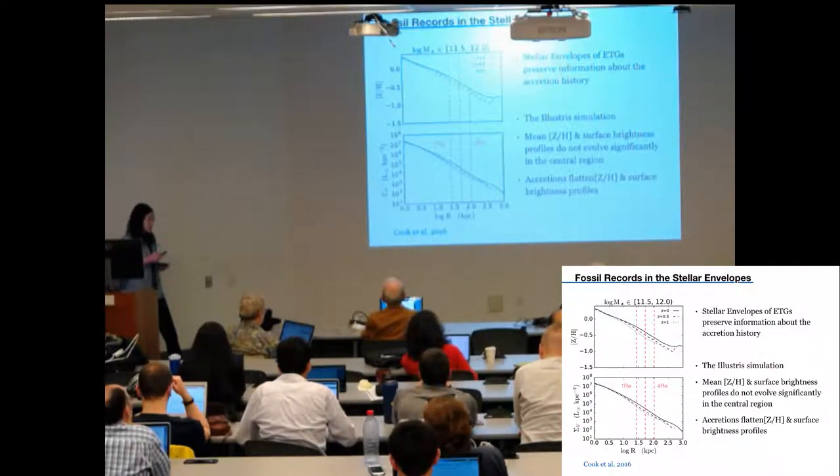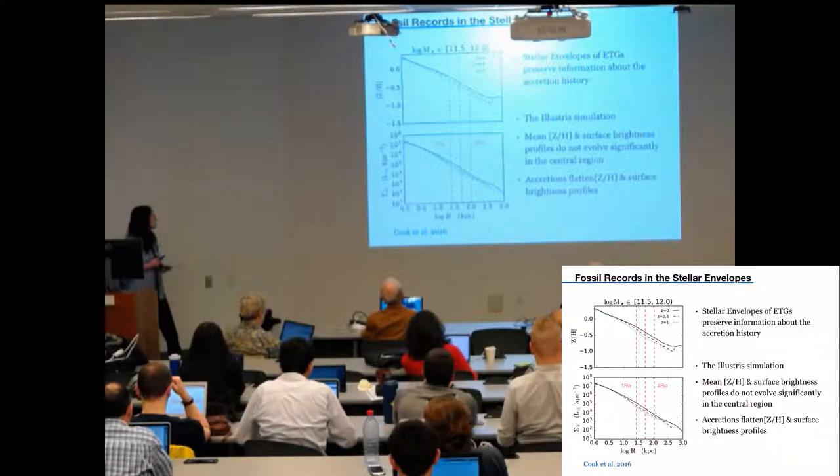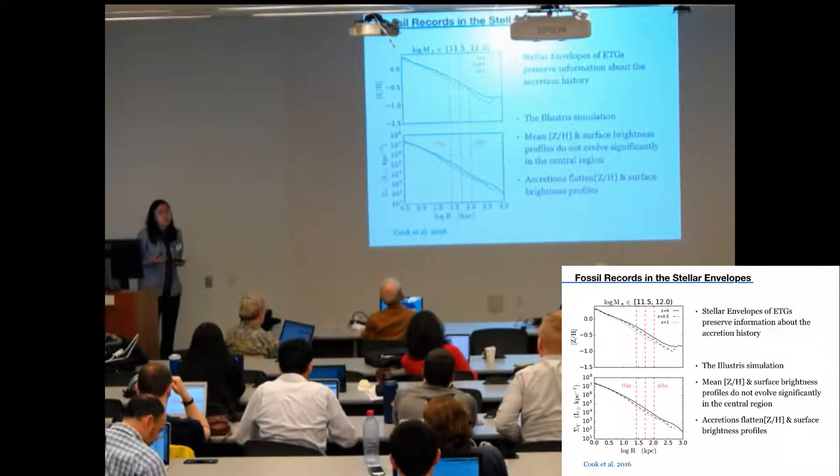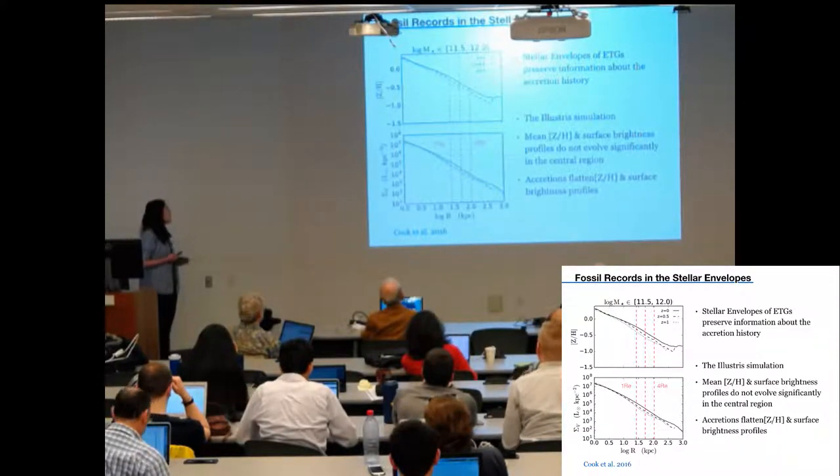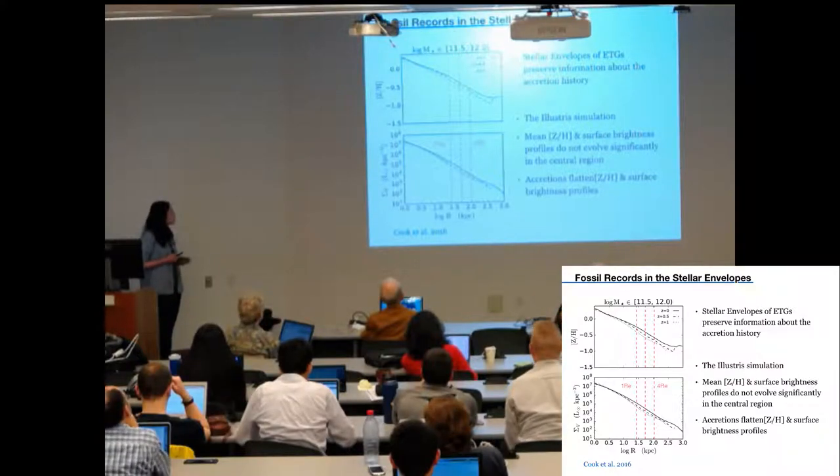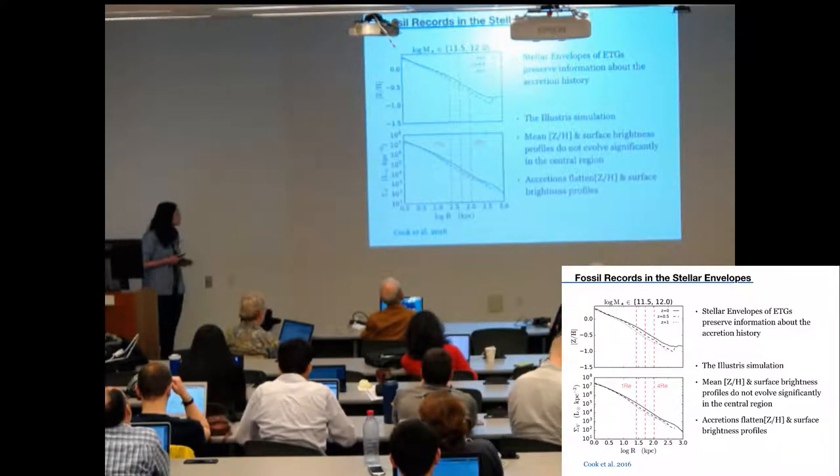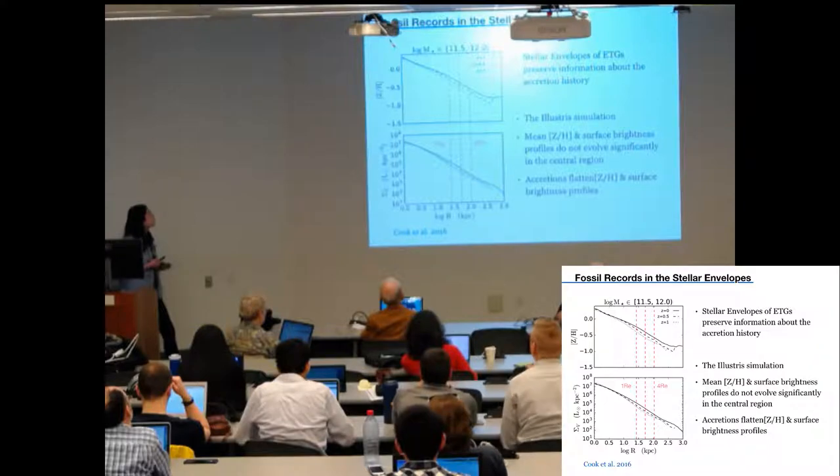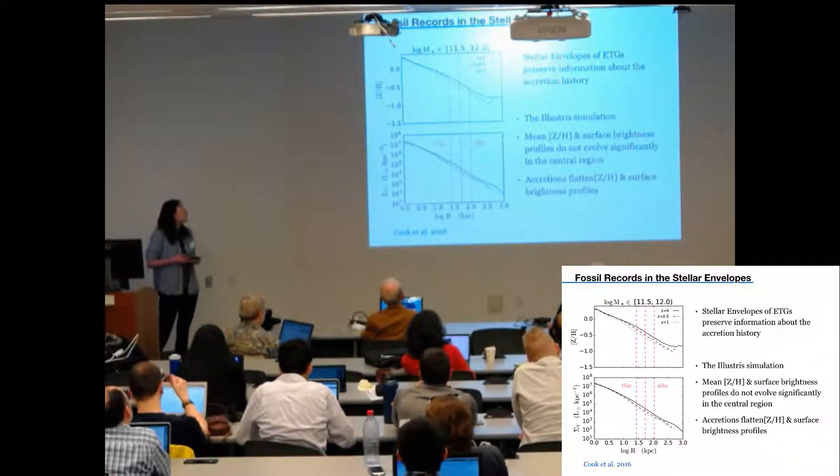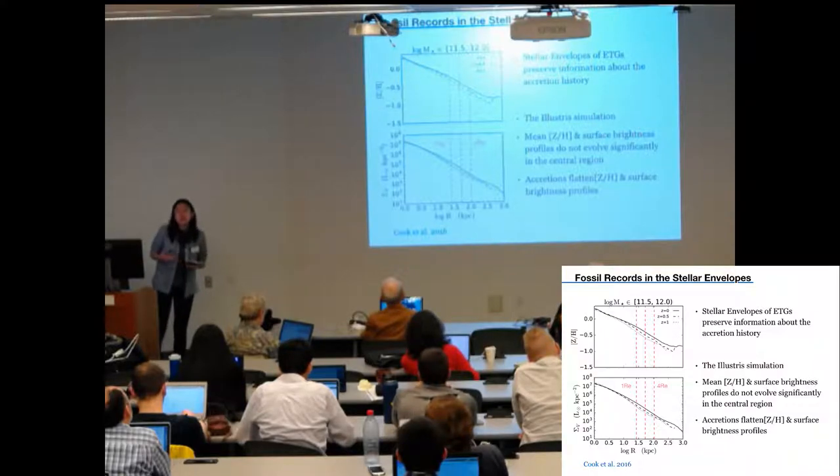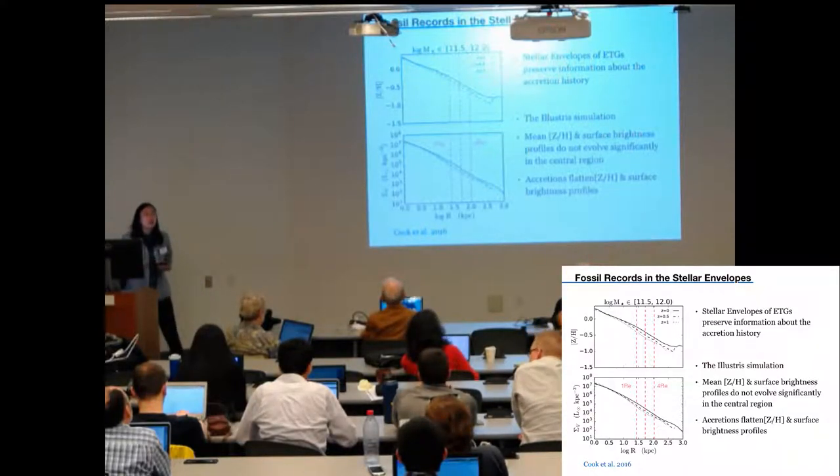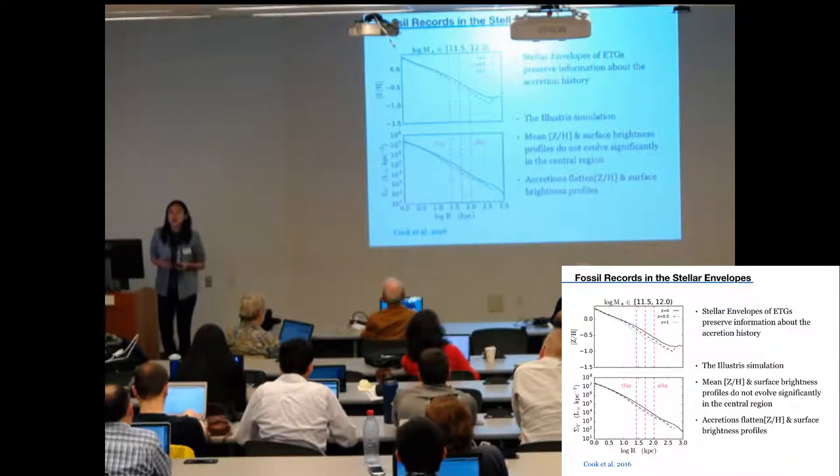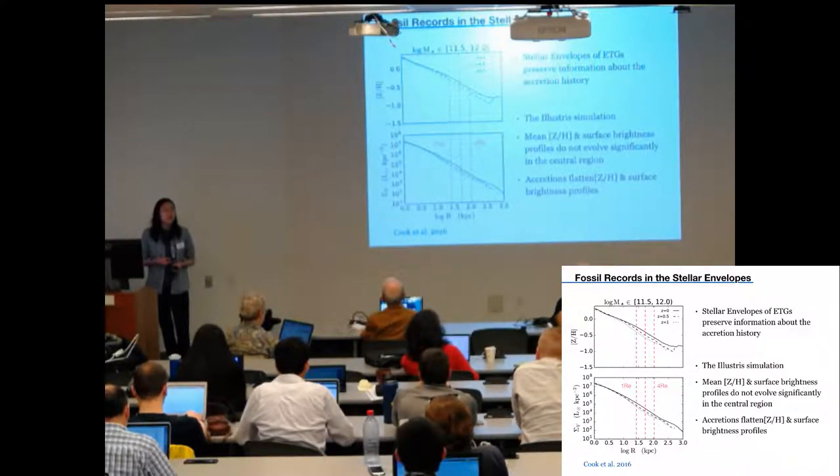And they found that in the central region of galaxy clusters, there is actually no significant evolution. But at the outskirts, the metallicity profile is flattened out from redshift one to zero. And this tells us that the fossil record at large radii can help us study the assembling history. And with this motivation, I'm going to talk about our works on two galaxy clusters.